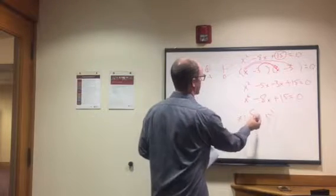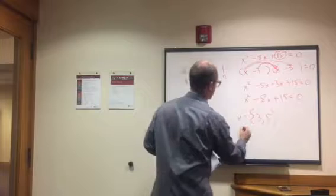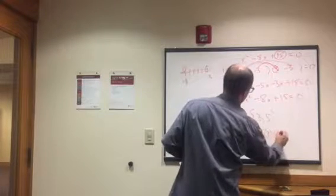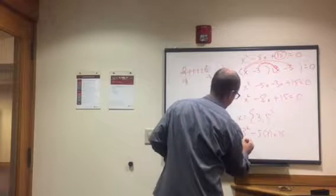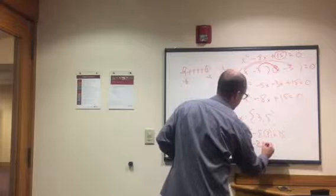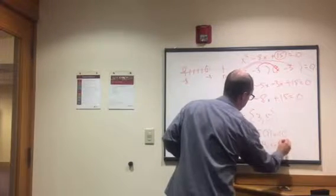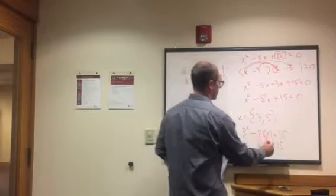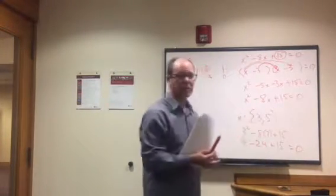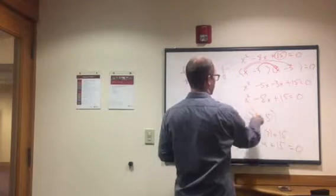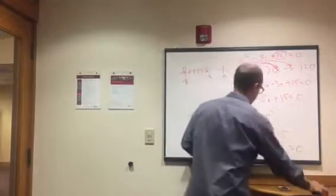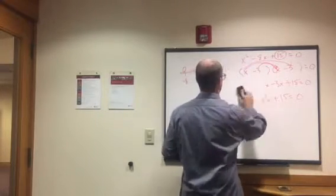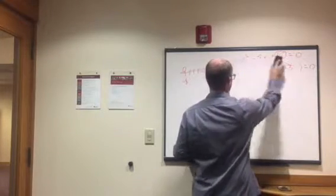As proof, let's plug in x equals 3 into the original equation: 3 squared minus 8 times 3 plus 15. That's 9 minus 24 plus 15. 9 minus 24 is negative 15, and negative 15 plus 15 equals zero. You would get the same result plugging in 5. That proves when we substitute 3 into the equation we get zero. It can seem like a long explanation at first, but it will make sense.